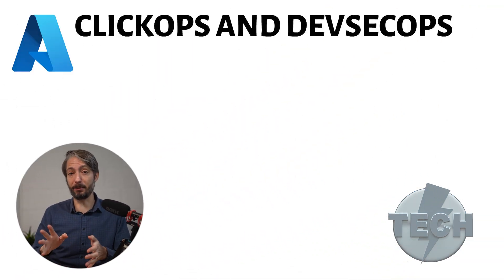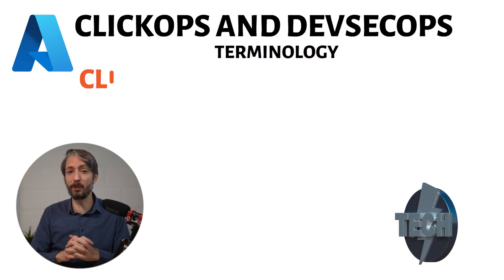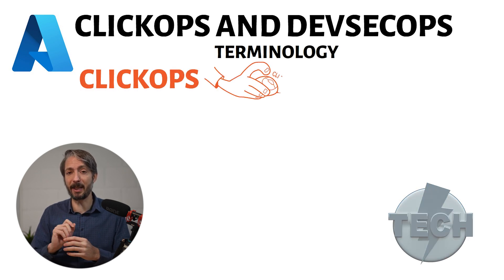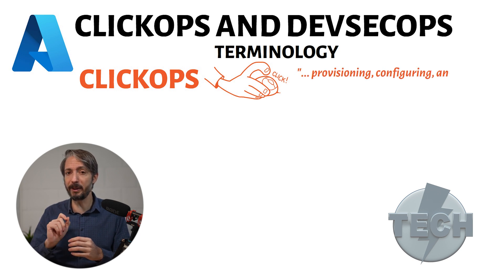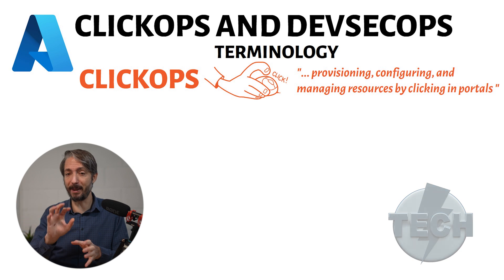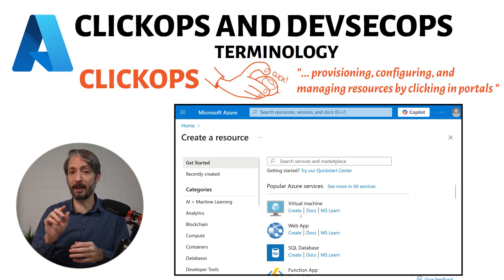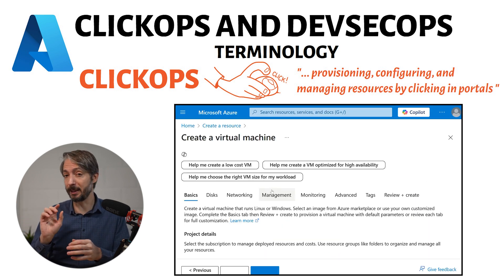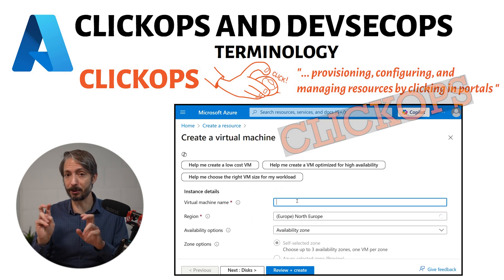Let's start by defining some key terms. First up, we have ClickOps. ClickOps, as defined by the Microsoft Cloud Adoption Framework, is the process of provisioning, configuring, and managing resources by clicking in portals, management consoles, and wizards. Every time you deploy a resource using the Azure portal, you're using something called ClickOps.